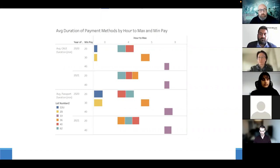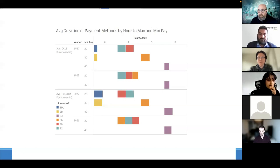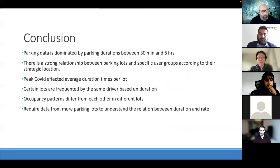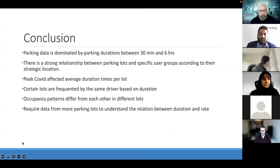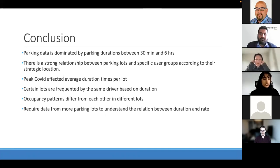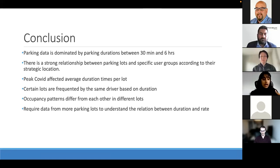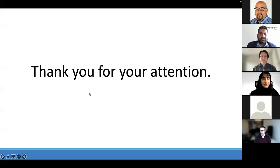The moderator interrupts to note the time limit and opens the floor for judge questions. The team is allowed to show the last slide. In conclusion: parking data is dominated by durations between 30 minutes and six hours; there's a strong relationship between parking lots and specific user groups based on strategic location; COVID affected average duration times per lot; certain lots are frequented by the same driver; occupancy patterns differ between lots; and more data is needed to understand the relation between duration and rate.